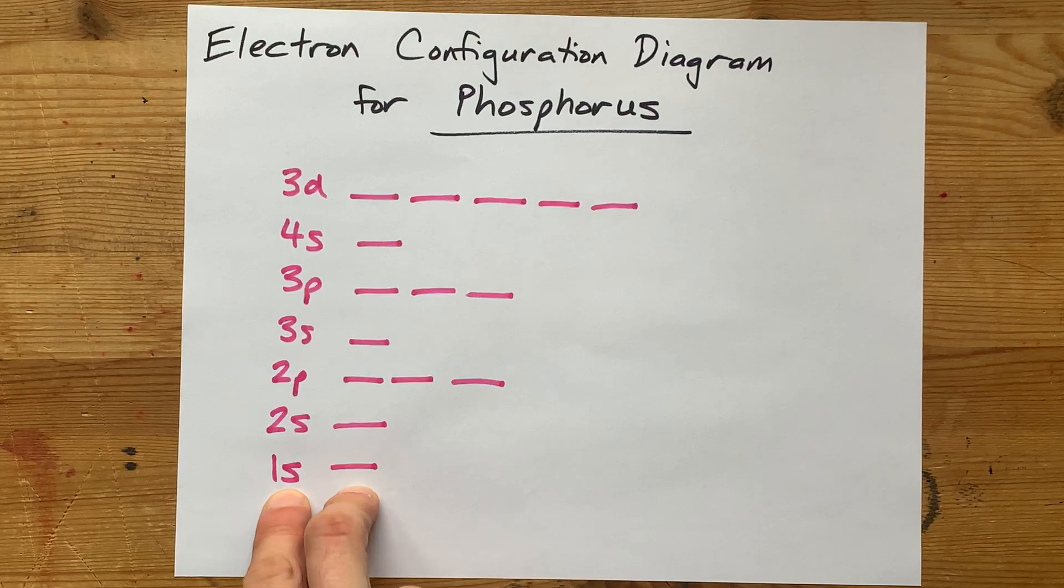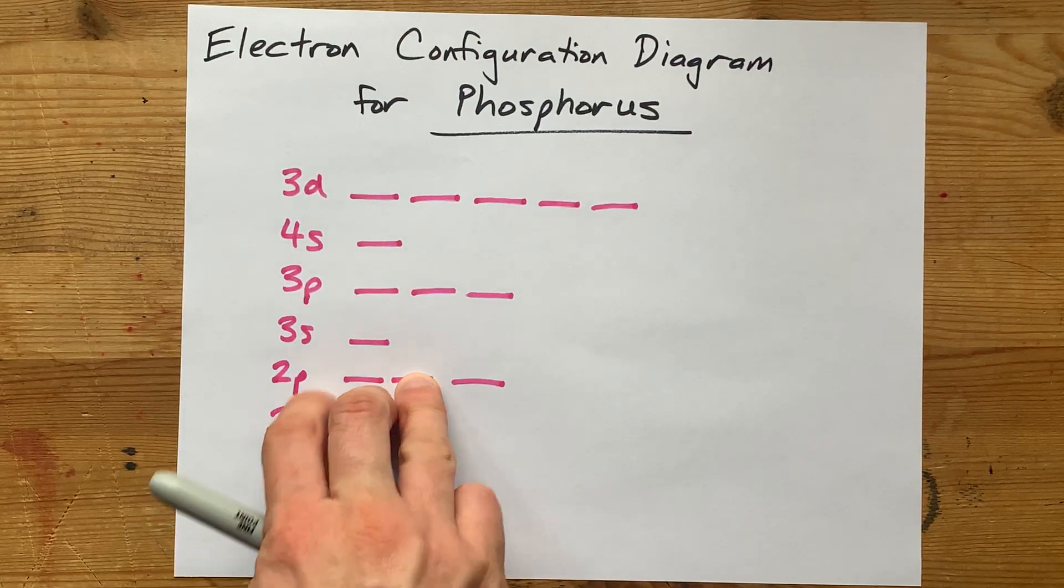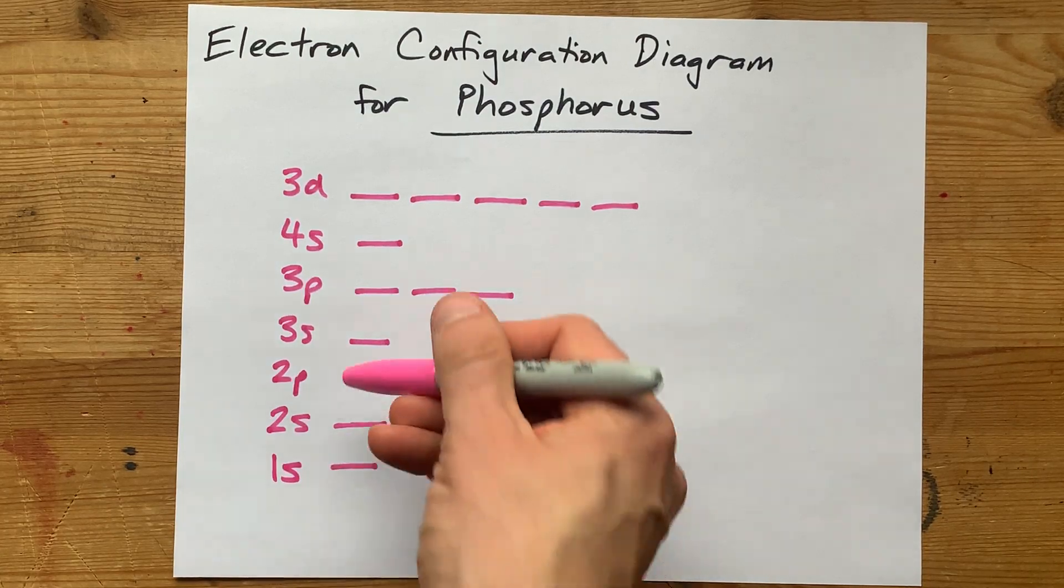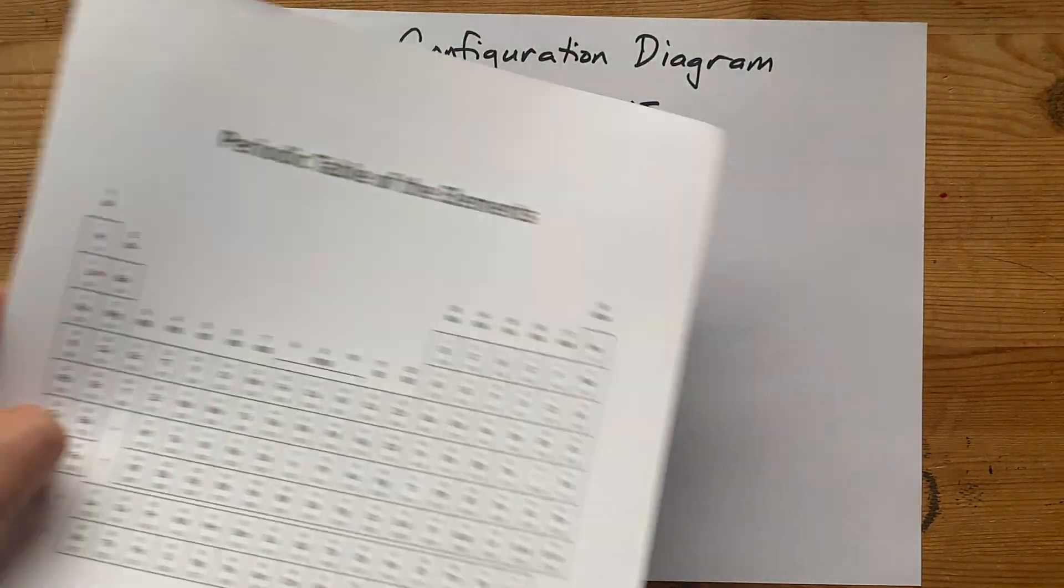All the S's have one slash, all the P's have three slashes, and all the D's have five slashes. Each slash holds two electrons.